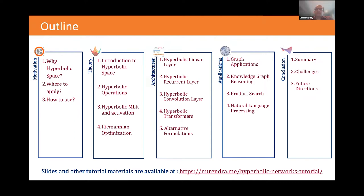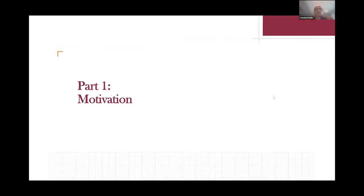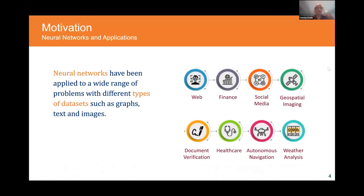All tutorial materials along with slides and videos from the WWW conference will be available at the tutorial website. Neural networks have been very successful in several real-world applications, including web, financial, and geospatial applications. They have effectively handled data in complex forms ranging from open-ended natural language data obtained from social media to spatially correlated data, and have been successful in mission-critical applications like healthcare and autonomous driving.